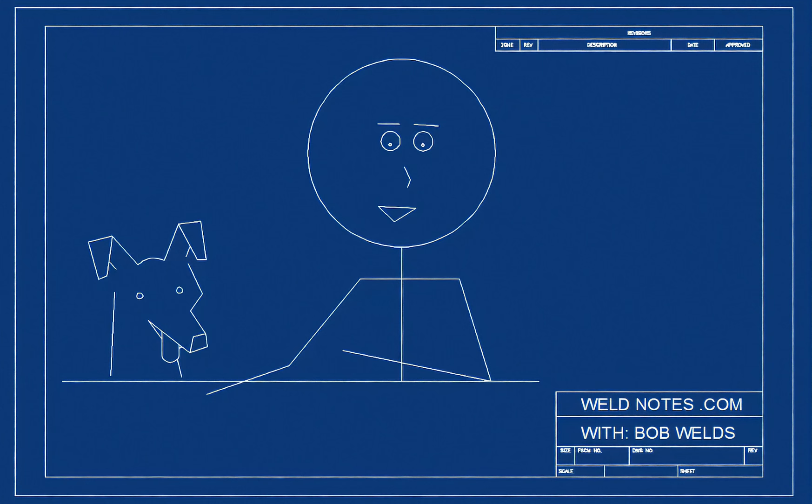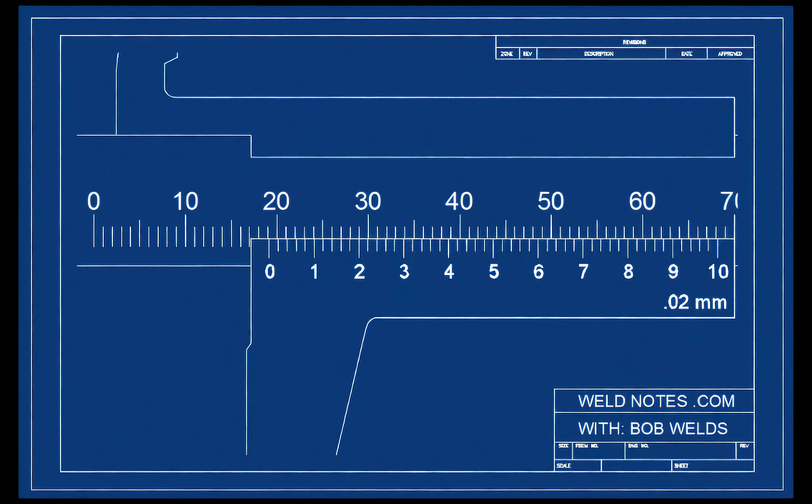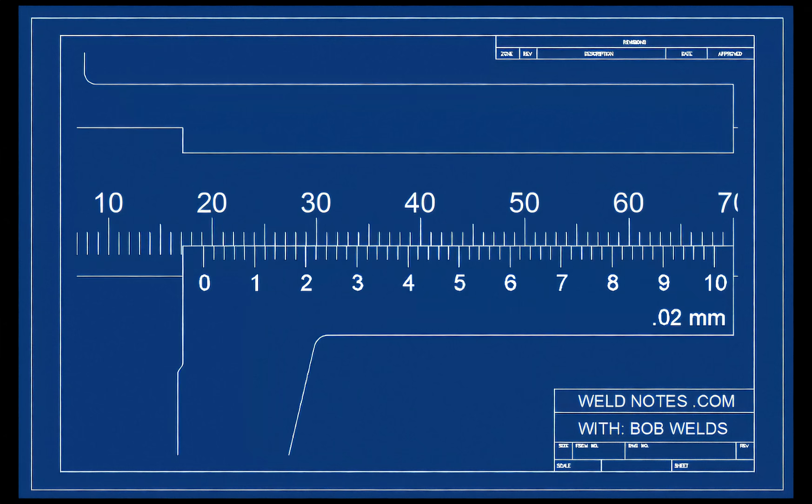Okay, let's go for broke and see if we can read the full 0.02 millimeter resolution. Ready for this one? Again, I'll show the whole caliper, then zoom in to let you see the vernier better. Here we go. Pause the video and write down your answer.